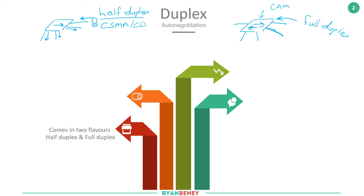Duplex comes in two flavours: half duplex and full duplex. Half duplex is where you can send or receive, and full duplex is when you can send and receive at the same time. The setting can be changed at the interface level — you can go into the switch, the router, or your NIC within your host PC and change whether it's half, full, or set to auto-negotiate.